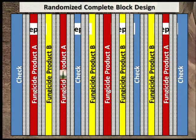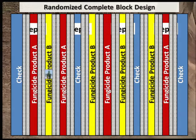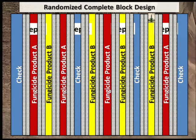For this design, you would mix Fungicide Product A in your tank and spray those treatment strips according to label directions. After cleaning out the sprayer, mix Fungicide Product B in the tank and spray those treatment strips according to label directions. To reduce human error, apply the treatments at the same plant growth stage and on the same day.